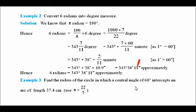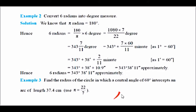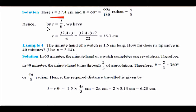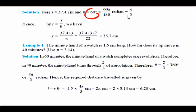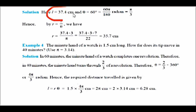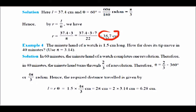Next: find the radius of a circle in which a central angle of 60 degrees intercepts an arc of length 37.4 cm. We use the formula L = Rθ. L is 37.4 cm. Since L = Rθ requires radians, we convert 60° by multiplying by π/180, giving π/3. Then R = L/θ = 37.4 ÷ (π/3), which gives us 35.7 cm as the radius.